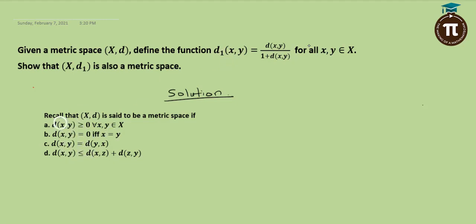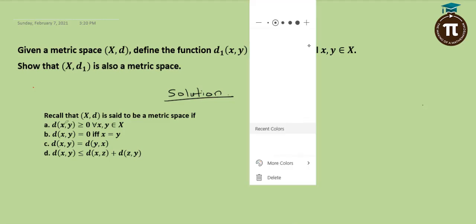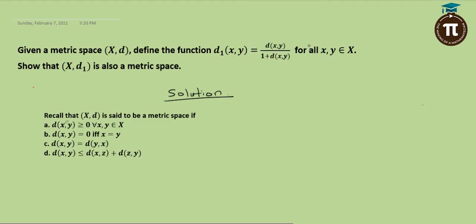Once we prove that d₁ satisfies all four properties, we are done proving that (S, d₁) is a metric space. Let's get started. We need to prove the first property.